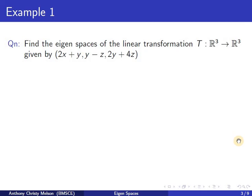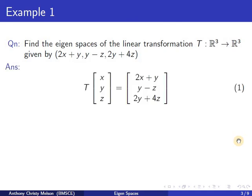To illustrate, let us consider the mapping t from R3 to R3 given by t of (x, y, z) equal to (2x plus y, y minus z, 2y plus 4z). We can write this in the form of a column vector, which is given by equation 1.